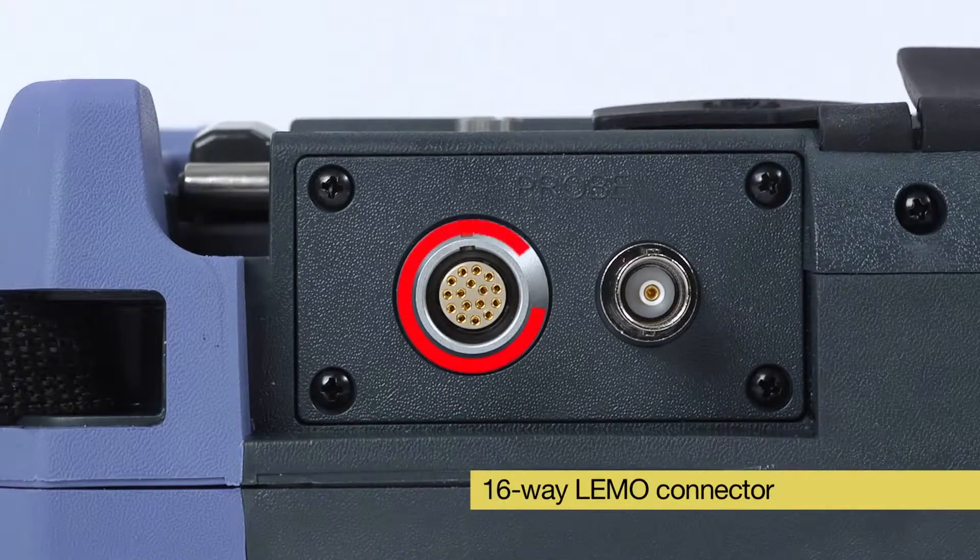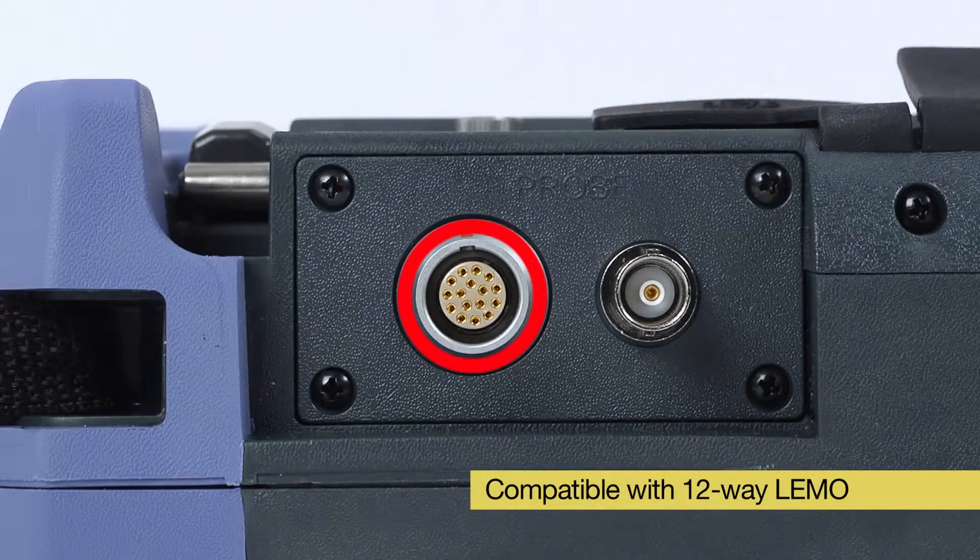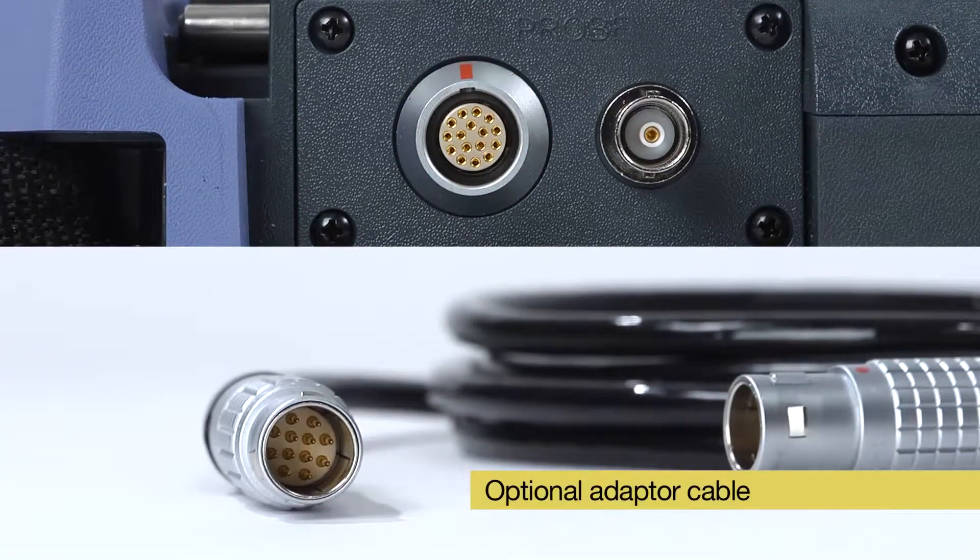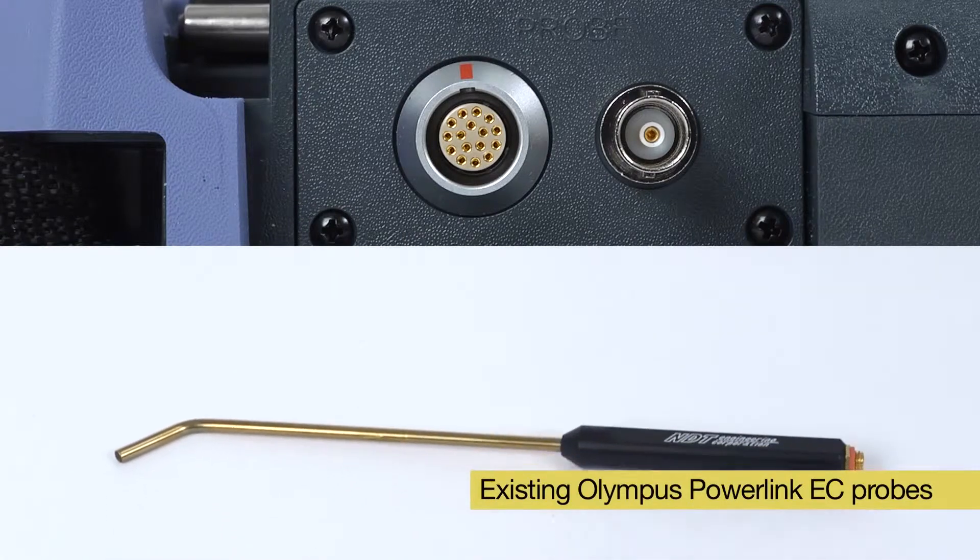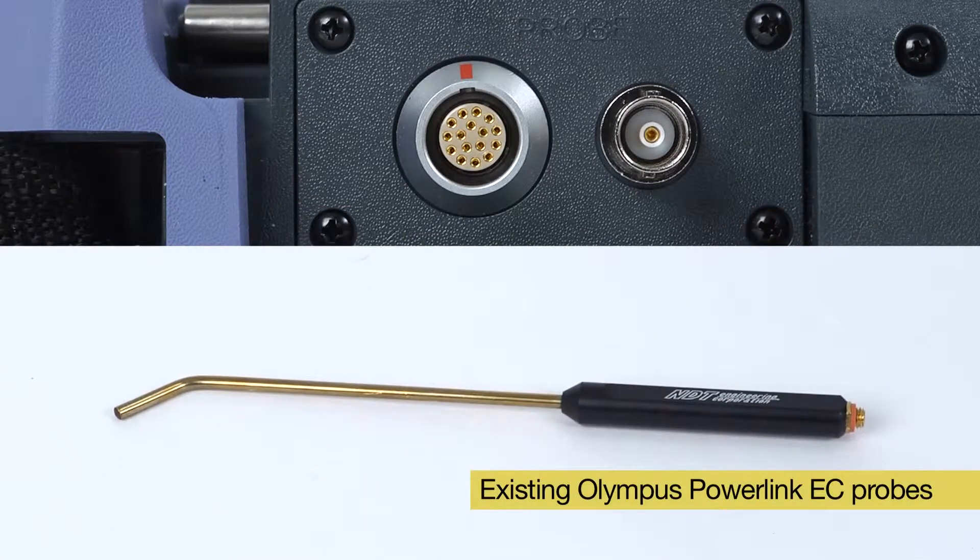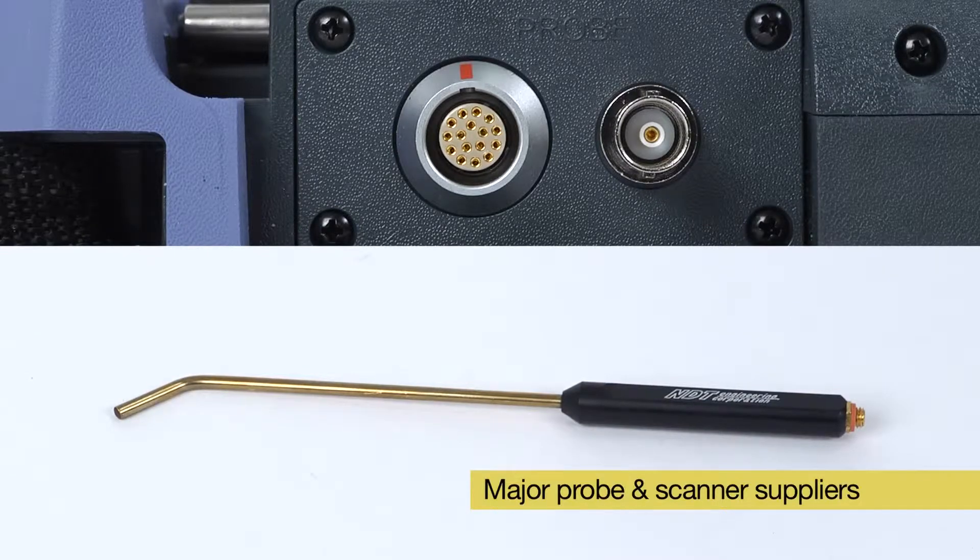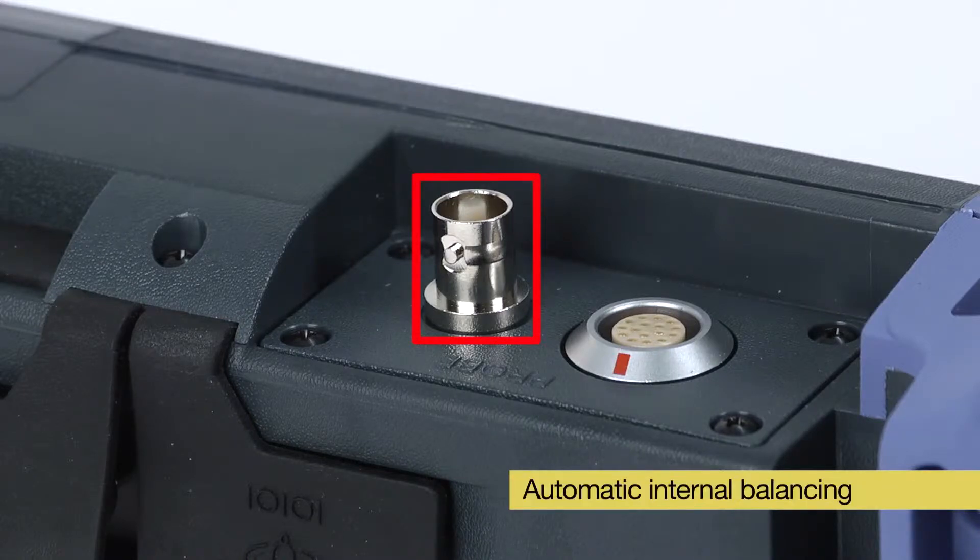The Nortec 600 features a 16-way LIMO connector that maintains compatibility with 12-way LIMO connectors by using an optional adapter cable. It also maintains compatibility with existing Olympus Powerlink Eddy Current Probes as well as other major probe and scanner suppliers. The Nortec 600 also features a BNC connector featuring new automatic internal balancing for single-coiled absolute probes.